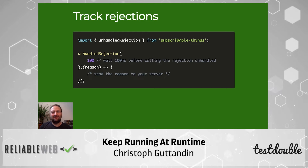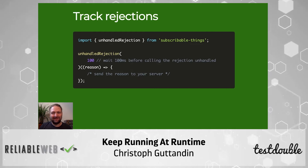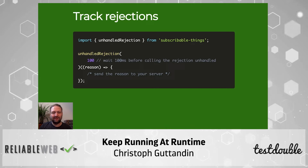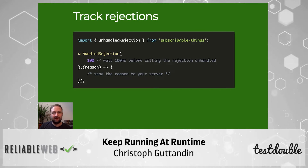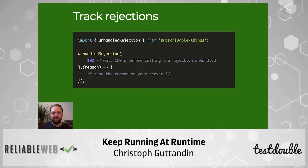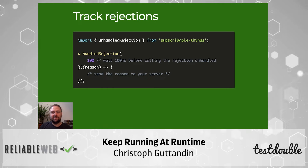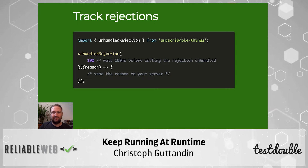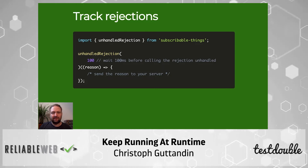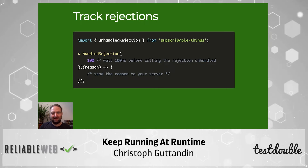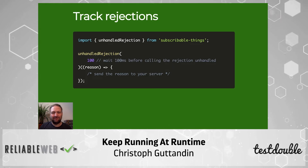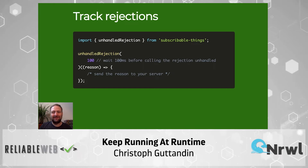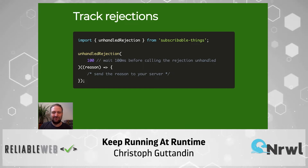Since the implementation of this can get a little hairy, I added a more sophisticated version to a library I maintain called subscribable-things. It provides wrappers around asynchronous browser APIs to make them usable with reactive programming, and it provides a function called unhandledRejection which can be subscribed to. It takes an argument to configure the duration of the cooling-off period — in this case 100 milliseconds as in the example before. One thing you definitely want to avoid is having runtime errors in the code which is meant to track runtime errors.